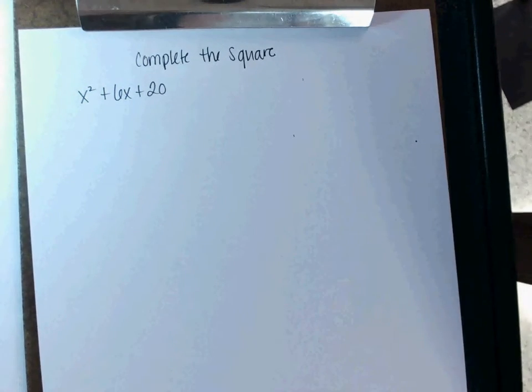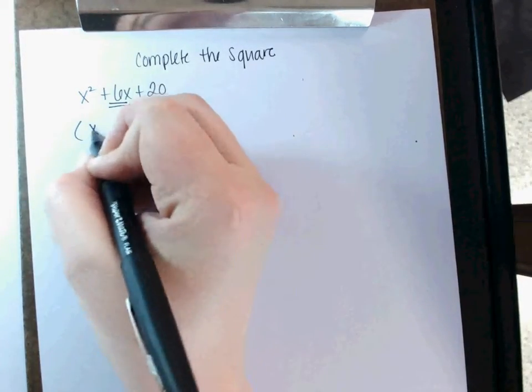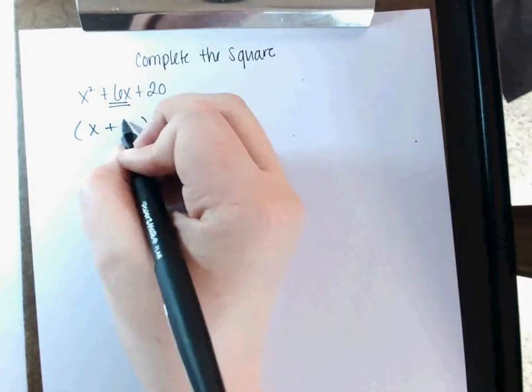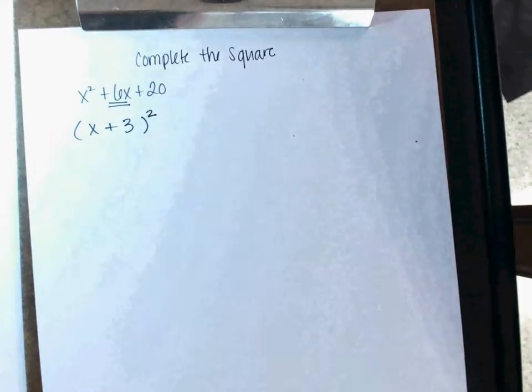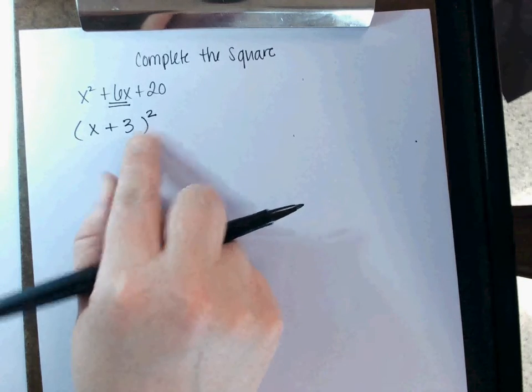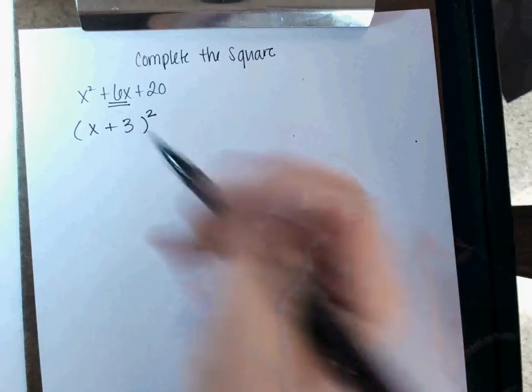You're going to take half of the 6x, and you're going to put it in parentheses with x. So if this is a 6, what's half of that? 3. Okay, now in order for this to be exactly the same, I'm only going to take part of the 20. So if this is x plus 3 squared, let's times that out.